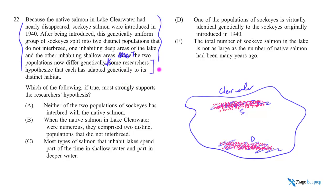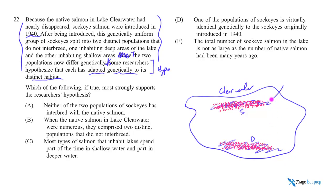Here comes the hypothesis. If I asked you to play scientist, play biologist — what story would you tell to explain how come when introduced in 1940 they were genetically uniform, and now they've split into two distinct groups, one liking the shallows and one the deeps, and now they're genetically different? One scientist says maybe it's because they adapted genetically to their distinct habitats. The shallows may have evolutionary pressures around food competition; the deeps might require better eyesight or higher sensitivity to light because less light penetrates. This is not a crazy hypothesis, but it's just one hypothesis.